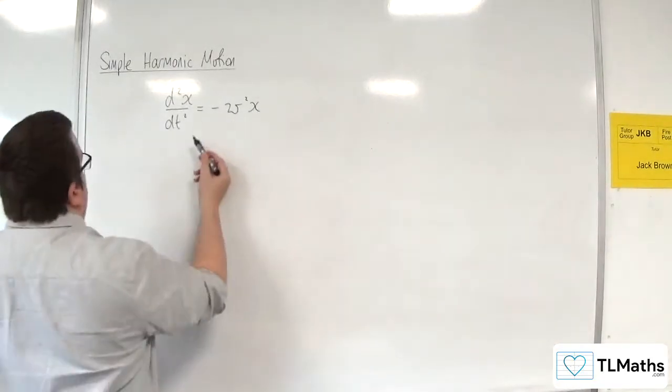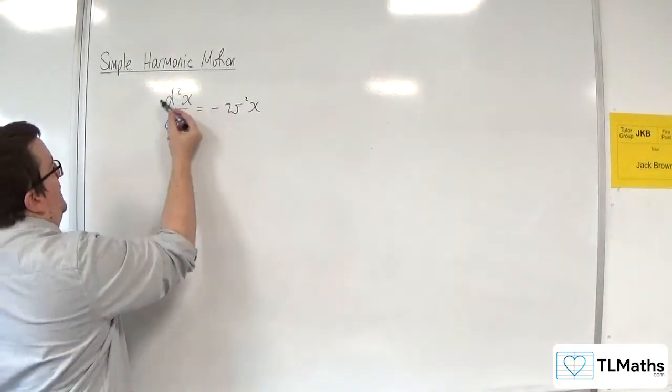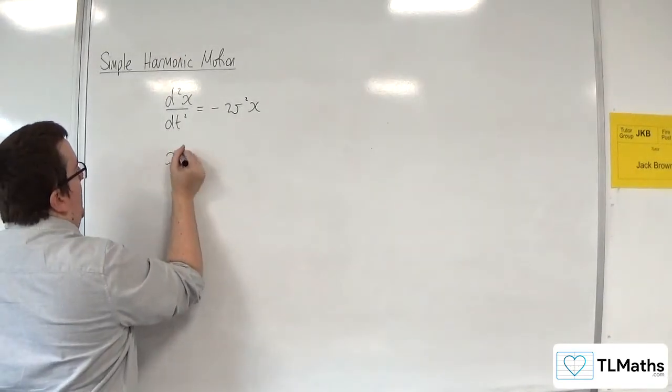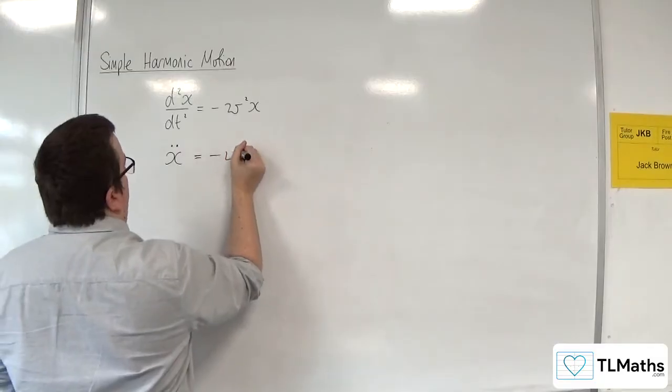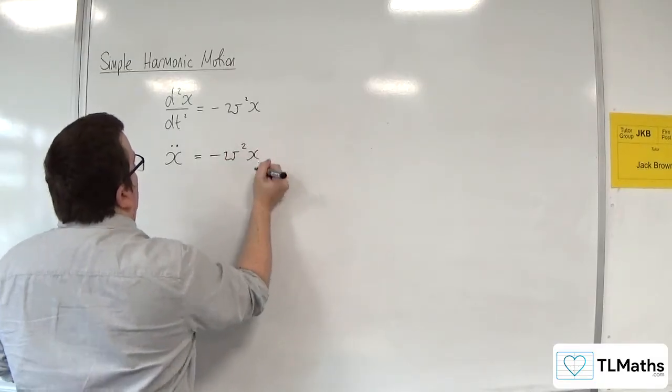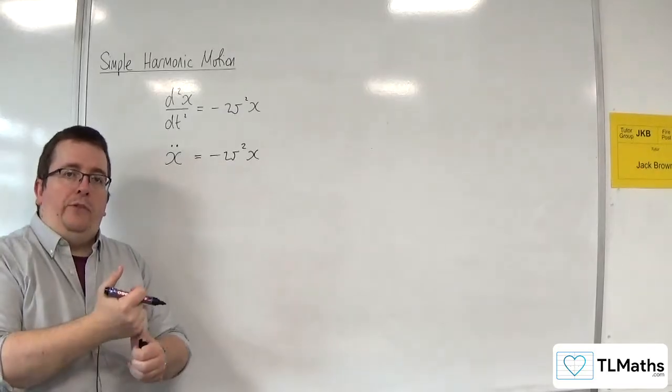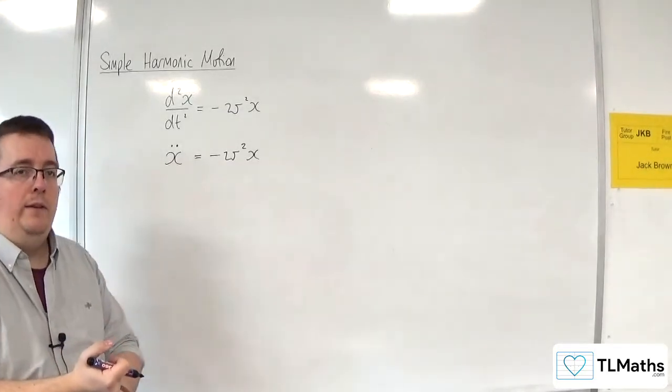Rather than writing d2x by dt squared, we would write x with two dots on the top. Now, each dot that you add to the top means another derivative has taken place.